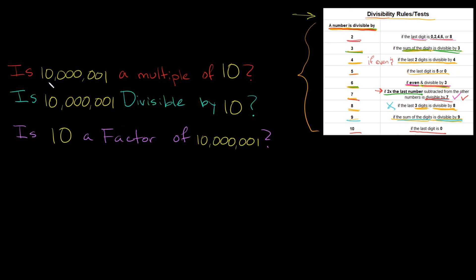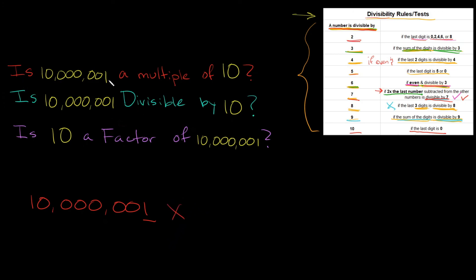Is 10,001 a multiple of 10, or is it divisible by 10? Is 10 a factor of 10,001? The last digit has to be 0 — does 10,001 end in 0? No, it ends in 1. So it fails the test. Is 10,001 a multiple of 10? No. Is it divisible by 10? No. Is 10 a factor of 10,001? No.